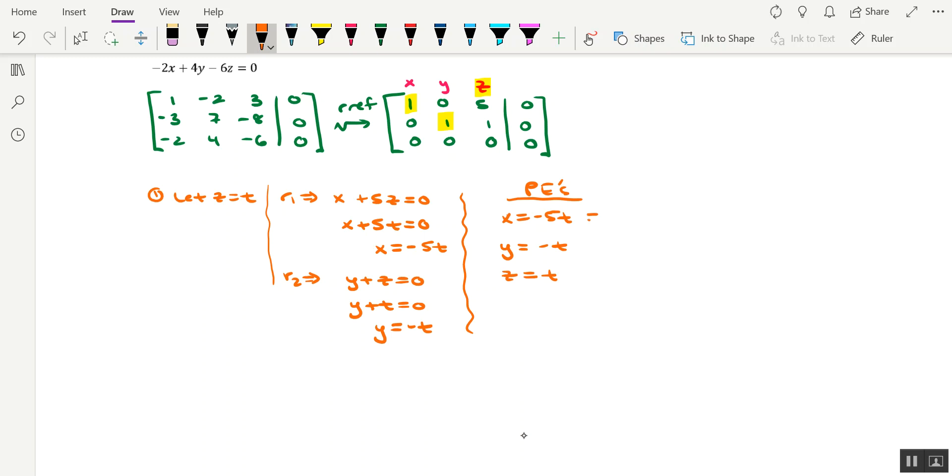How would we know that it's going through the origin? Well, you could rewrite each one of these equations involving the three components of the origin in three space. Namely, 0 minus 5t, 0 minus t, and 0 plus t.